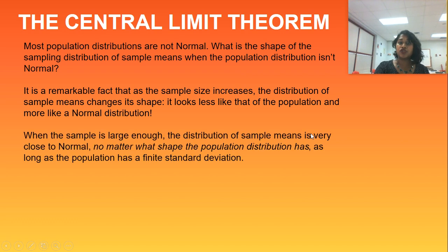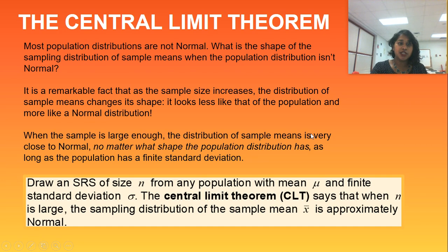And this is true no matter what the shape of the original population distribution is. Even if it's crazy, funky, bimodal, quadruple modal, whatever is happening with the original population distribution, if your sample size gets large enough and still meets the 10% condition, then it can normalize your sampling distribution's shape.